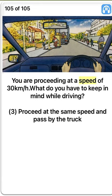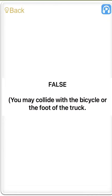You are proceeding at a speed of 30 km per hour. What do you have to keep in mind while driving? Three. Proceed at the same speed and pass by the truck. False. You may collide with the bicycle or the foot of the truck.